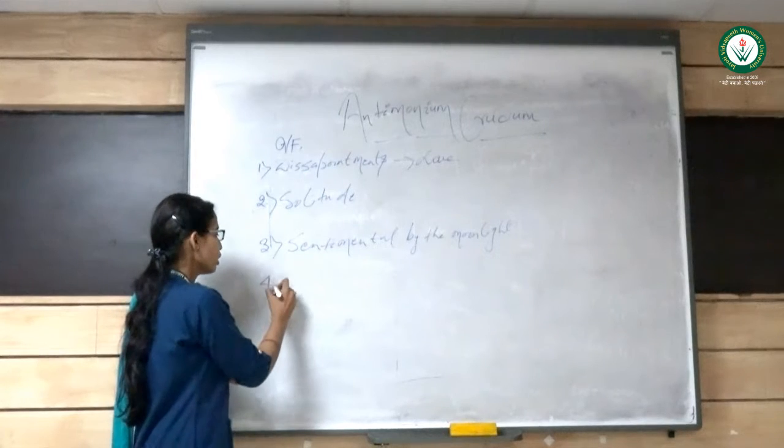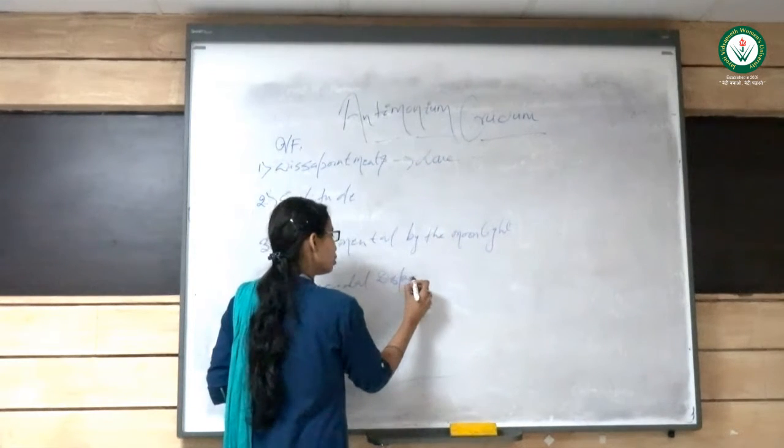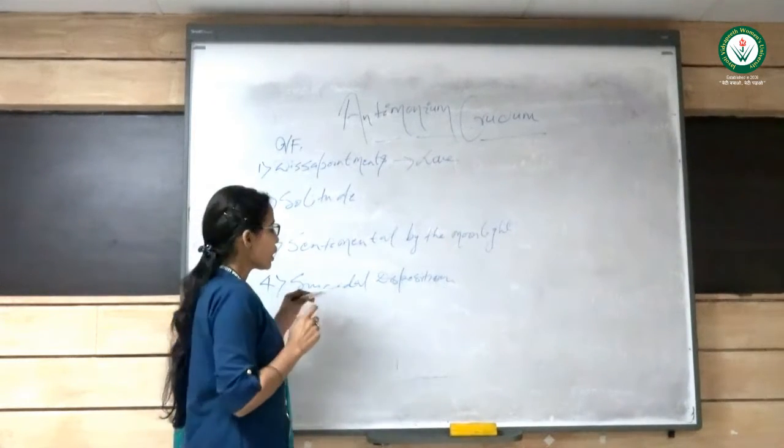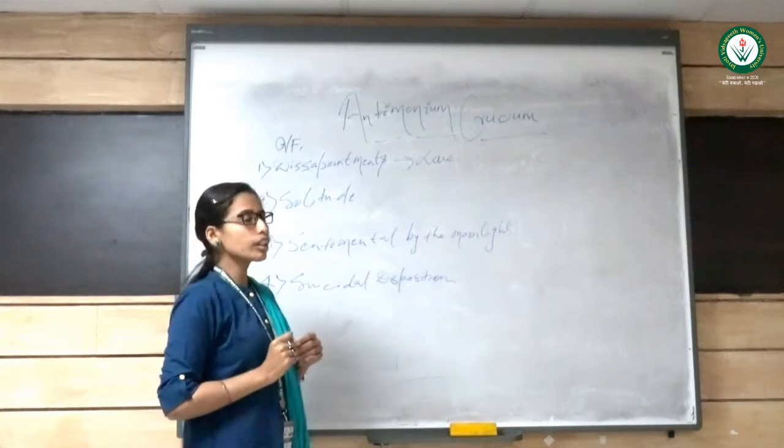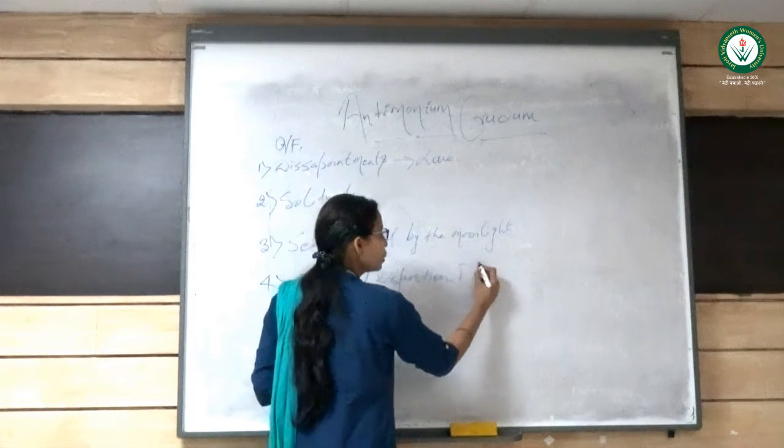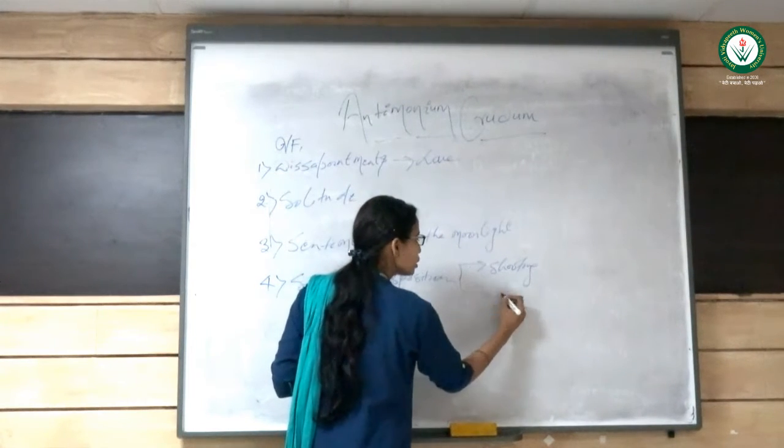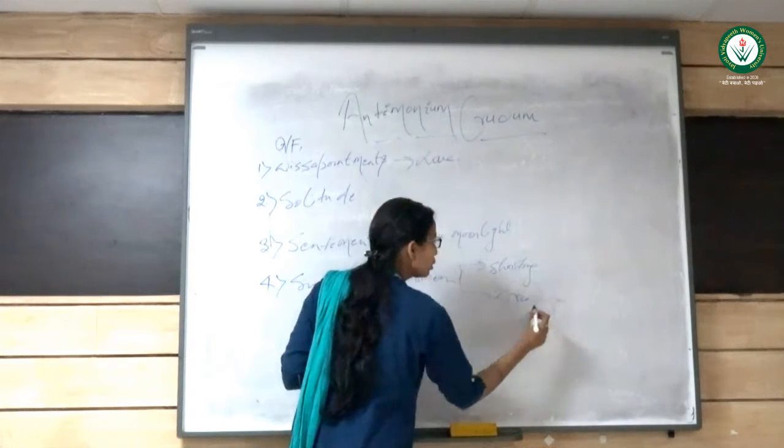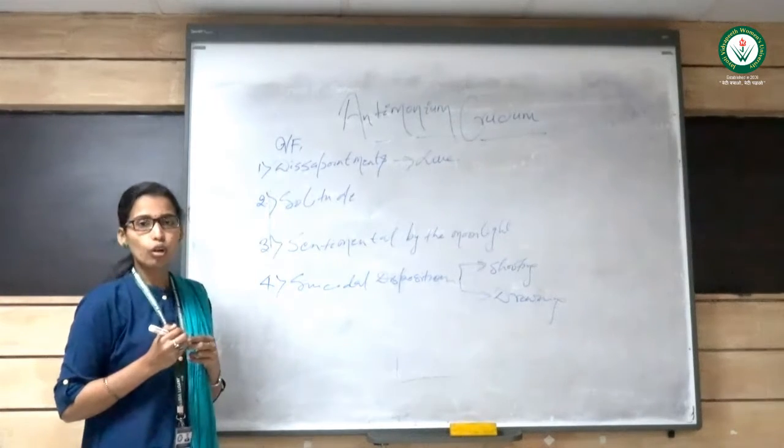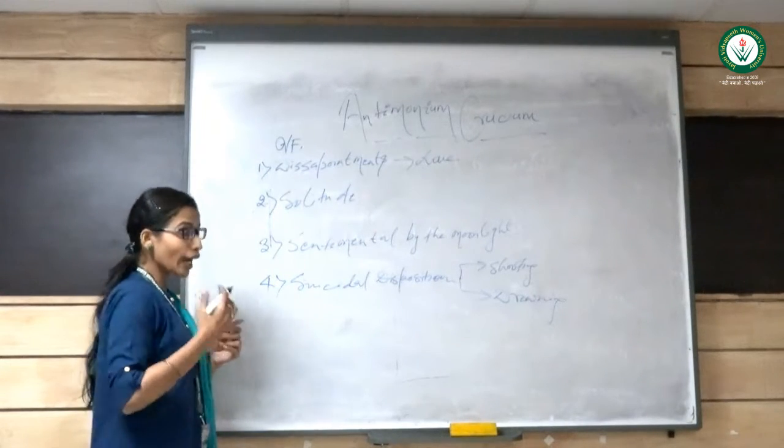Again, after this we see the suicidal dispositions. At the later stages, after all these symptoms have evolved, they also get the dispositions of suicide, especially by shooting themselves. And second, by drowning. So either they think of going to the water and drowning themselves, or they think of shooting themselves. These are the two ways how they want to end their lives.